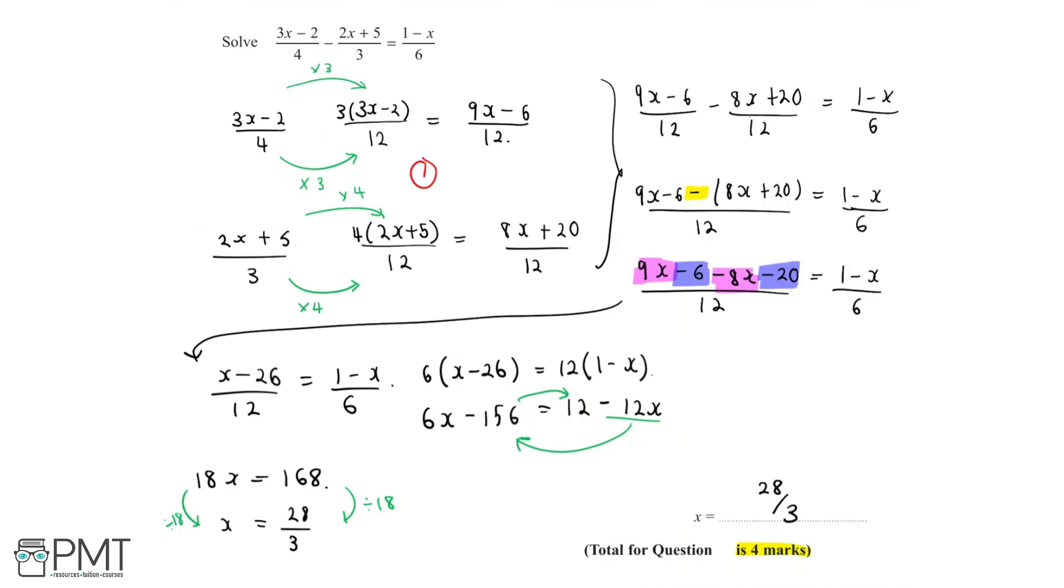The second mark is for the correct expansion of brackets and for simplifying this into x minus 26 over 12 equals 1 minus x over 6. The third mark is for correctly isolating terms in x and number terms of the linear equation and ending up with 6x minus 156 equals 12 minus 12x. We isolated the x terms by ending up with 18x equals 168.